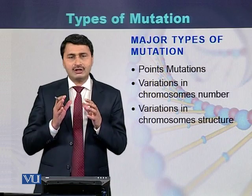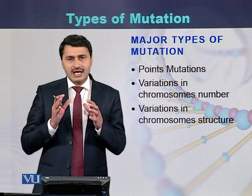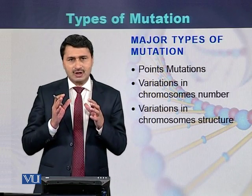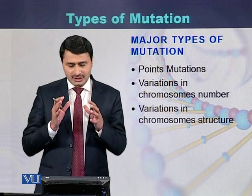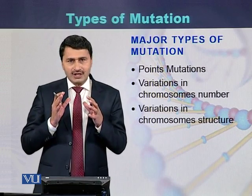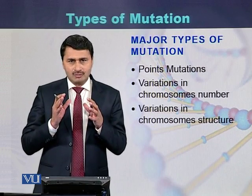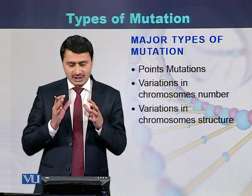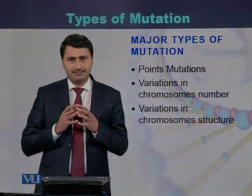In conclusion, there are three major types of mutations: point mutations, variation in chromosome structure, and variation in chromosome number.